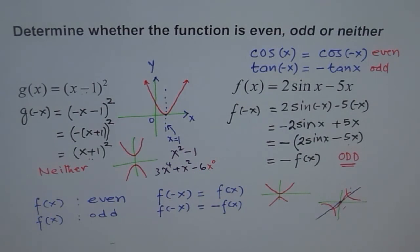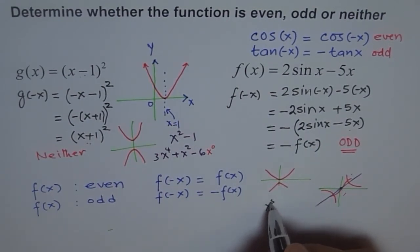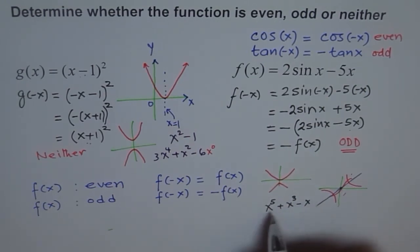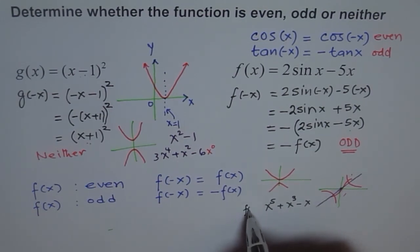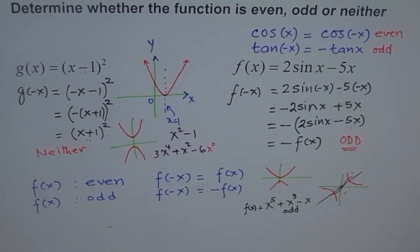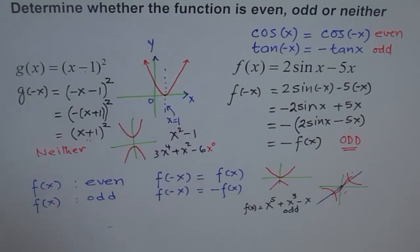If you want to write a polynomial which is odd, the degrees should all be odd — like x cubed minus x. This kind of function will be an odd function because all the degrees are odd. But if you write plus 2, it becomes neither. You can determine odd and even functions both graphically and algebraically: even functions are symmetric about the y-axis, and odd functions are symmetric about the origin.